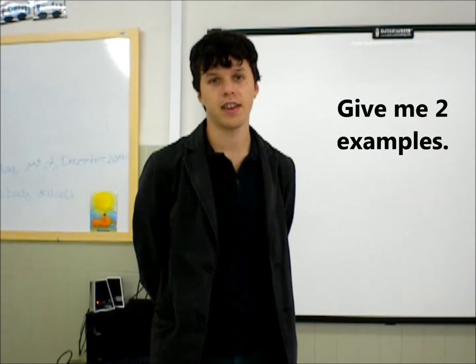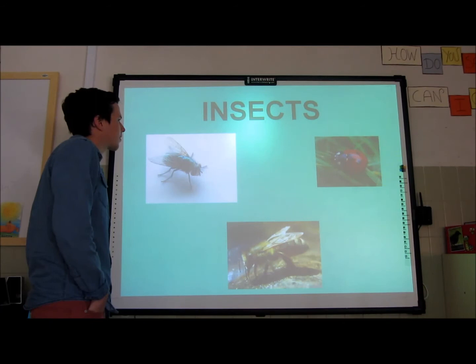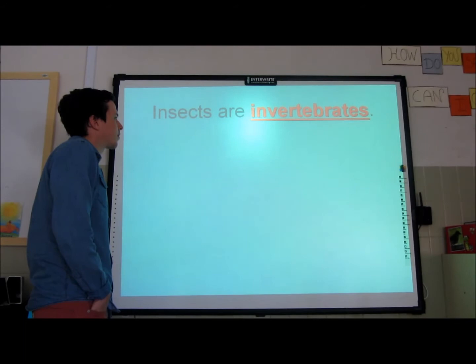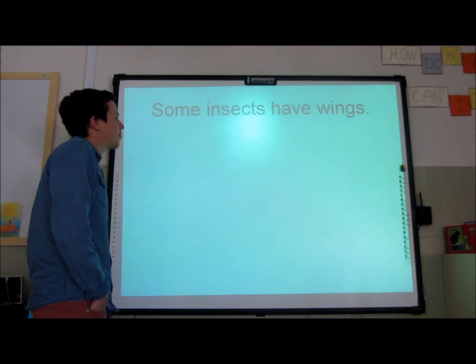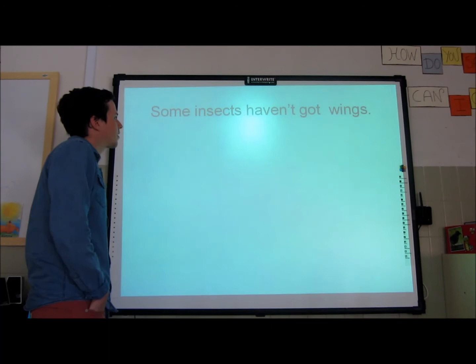Tell me three characteristics of insects. Give me two examples. Insects lay eggs. Insects are invertebrates. Some insects have wings and some insects haven't got wings.